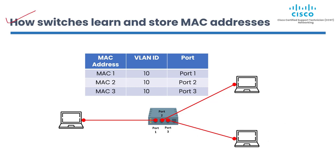Switches learn MAC addresses by monitoring network traffic and recording the source MAC addresses of devices that send data packets. When a data packet arrives, the switch checks its MAC address table to determine if it knows the destination MAC address. If the destination MAC address is not in the table, the switch broadcasts the packet to all network ports — this is called flooding. When a device responds, the switch records its MAC address and associates it with the corresponding port, updating the MAC address table. For example, with PC A (MAC 1), PC B (MAC 2), and PC C (MAC 3), if A sends a message to B and the switch doesn't know MAC 2, it floods all ports. When B responds from port 2, the switch saves MAC 2 in the MAC address table.